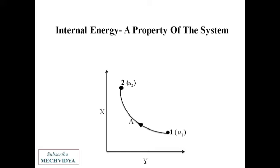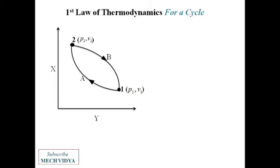So change in internal energy can be written as the internal energy value at state 2 minus the internal energy value at state 1. Now if the system is cyclic and it returns from 2 to 1 through the path 2b1.